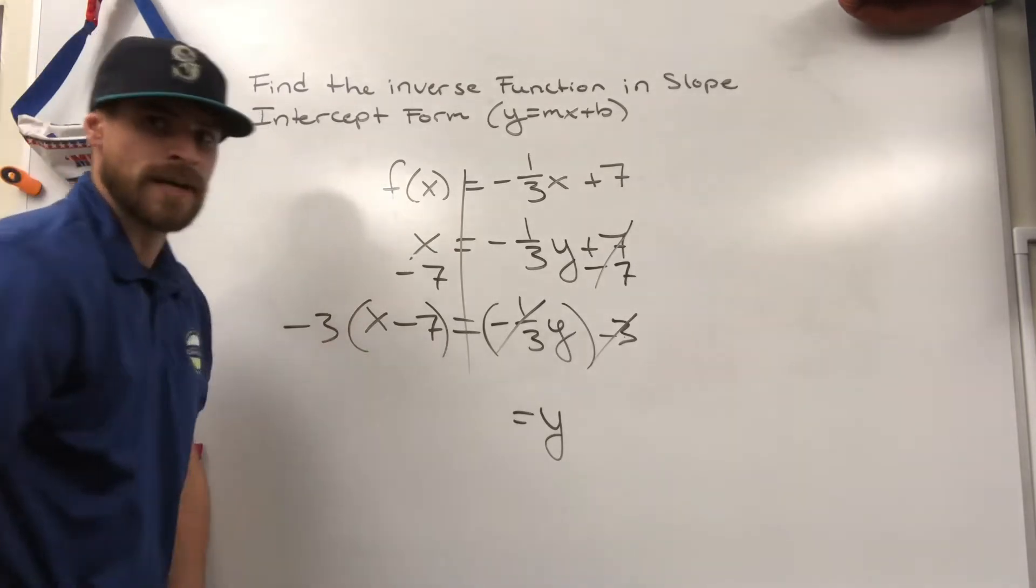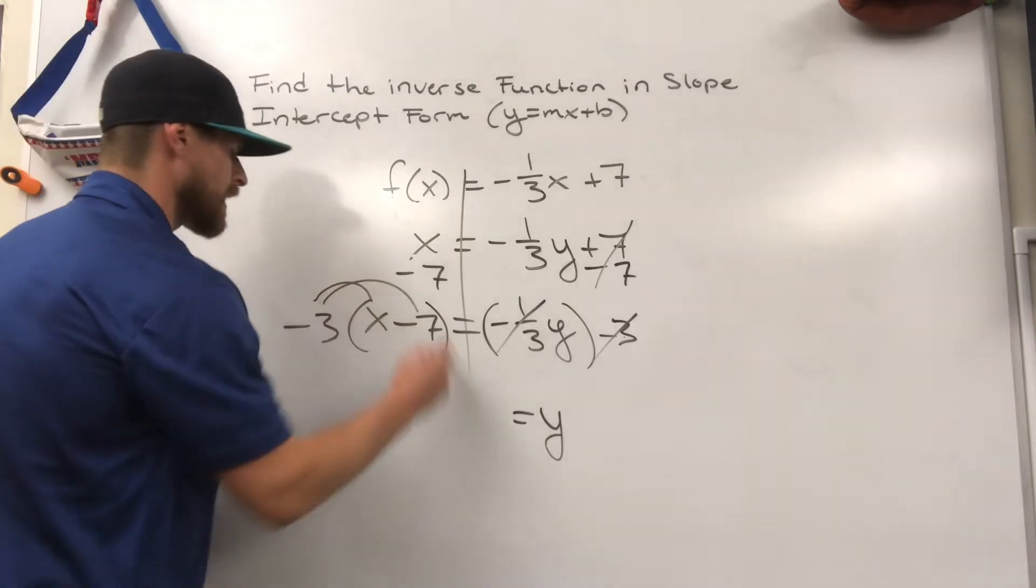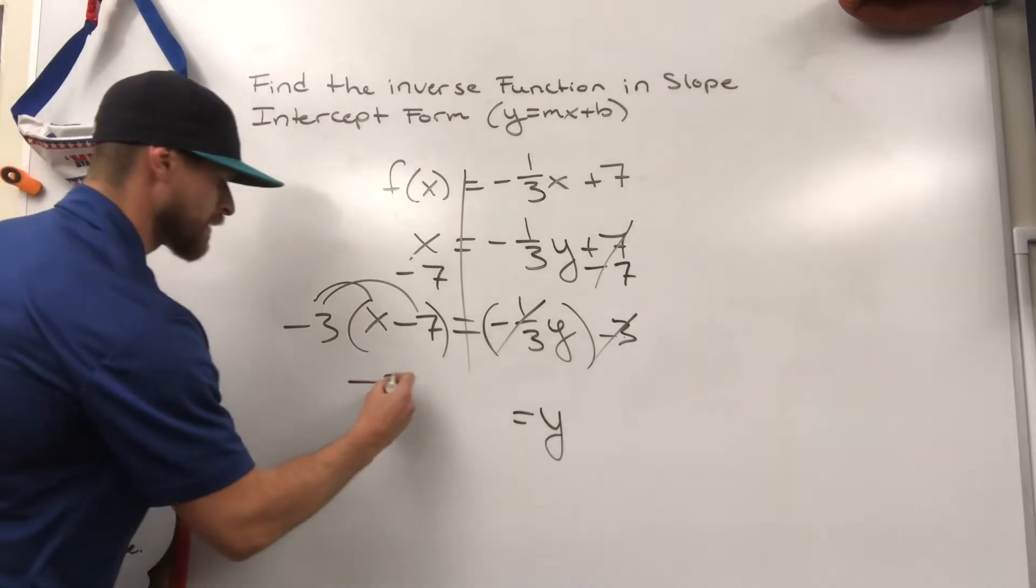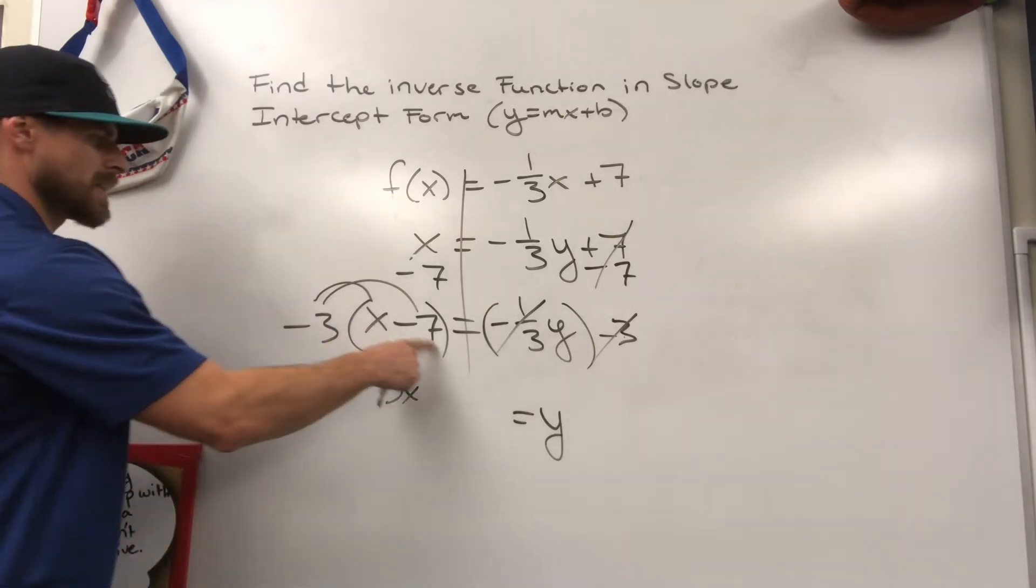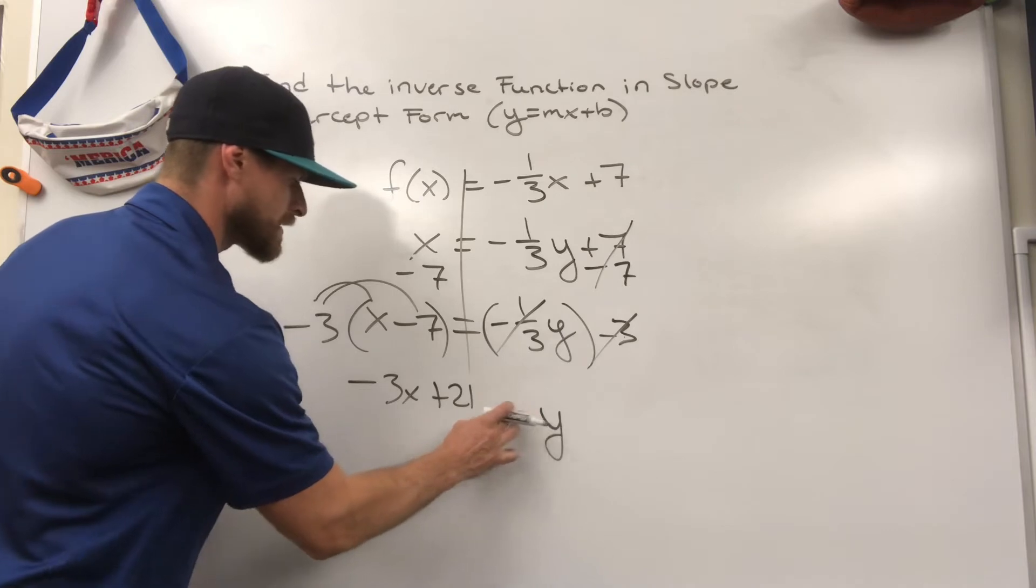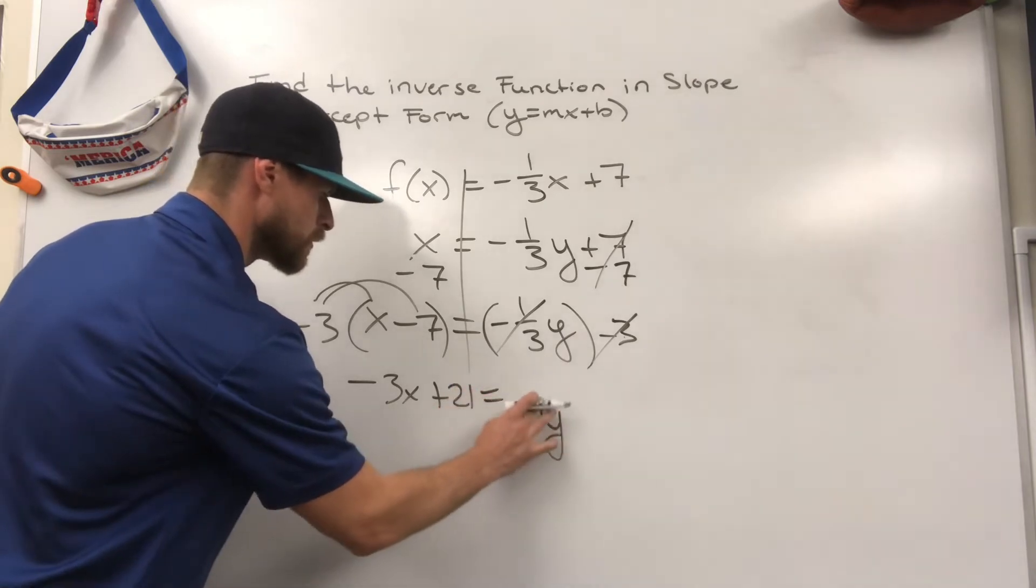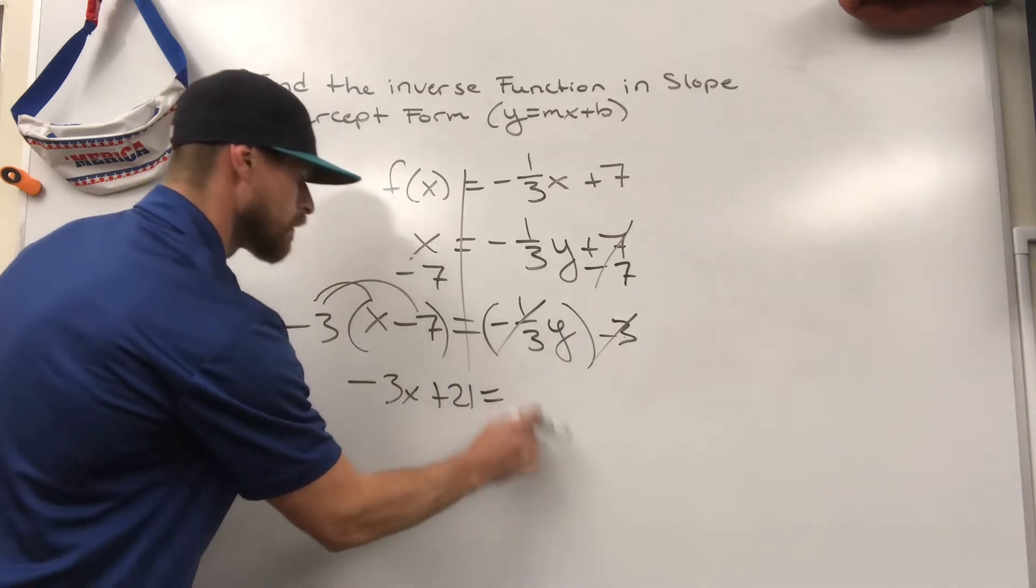It's a good thing back in eighth grade you were taught the distributive property because now you know negative three times x is negative three x. Negative three times negative seven is positive 21, and that is equal to y.